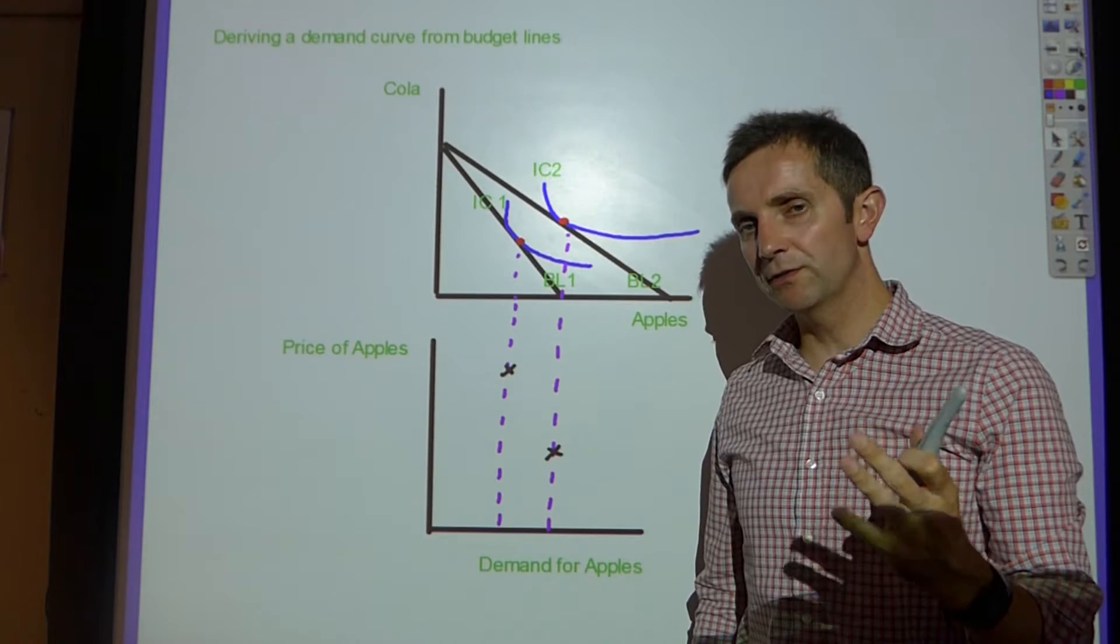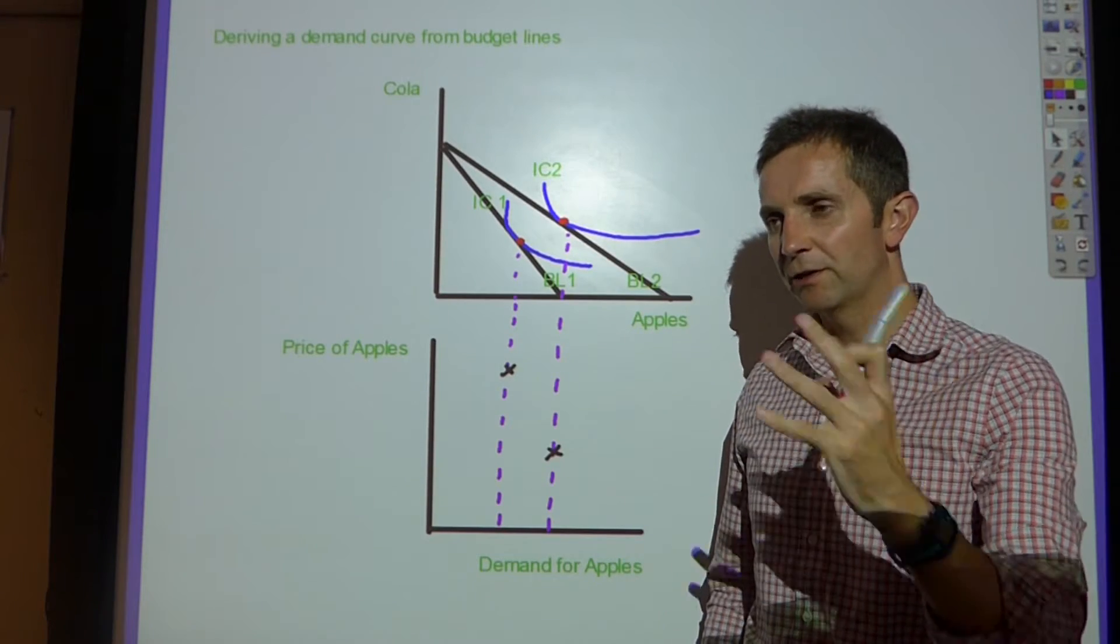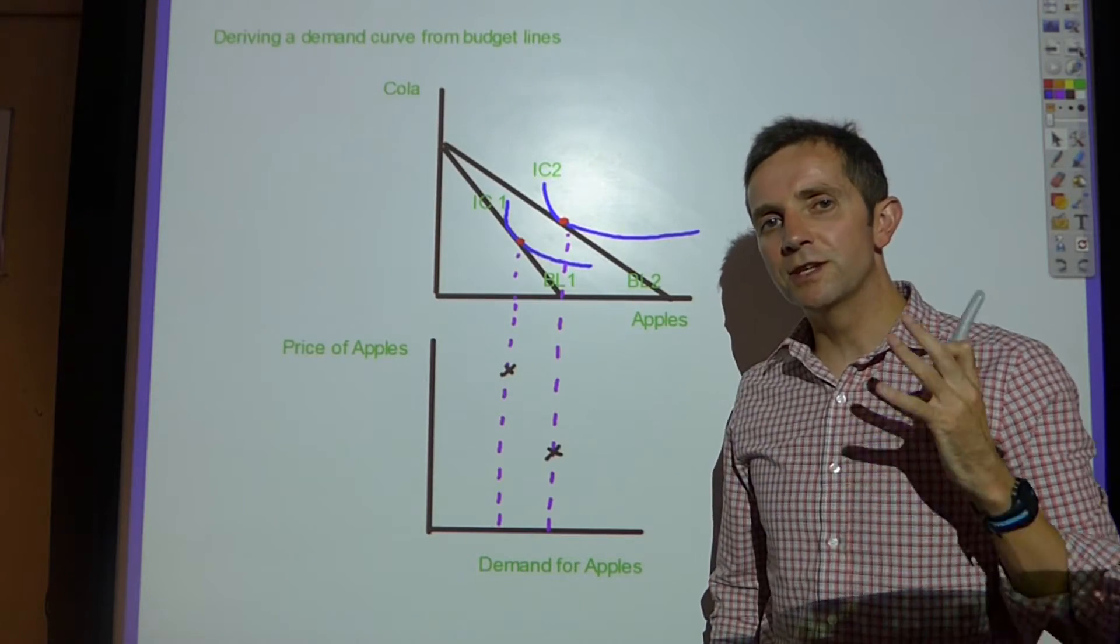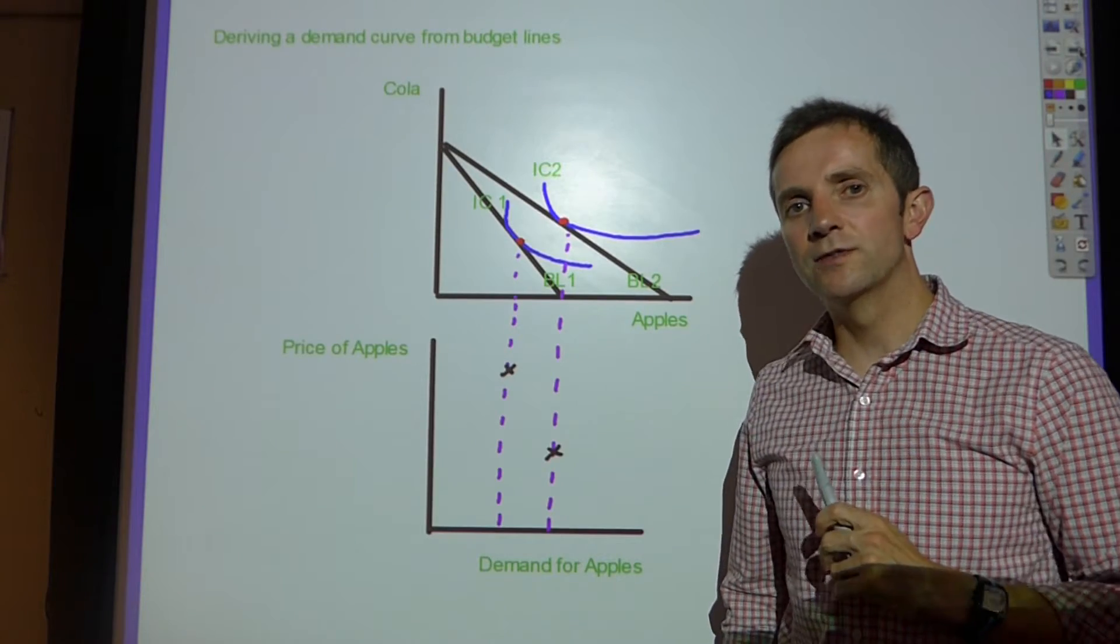So in previous videos we've looked at changes in income and changes in price and inferior goods and so on and so forth. But this time we're looking at how to derive a demand curve from budget lines and indifference curve diagrams.